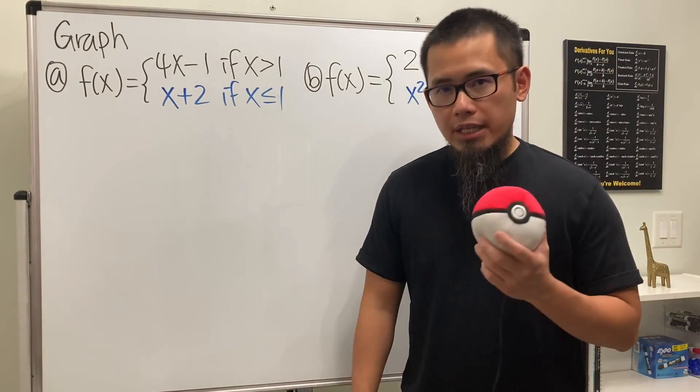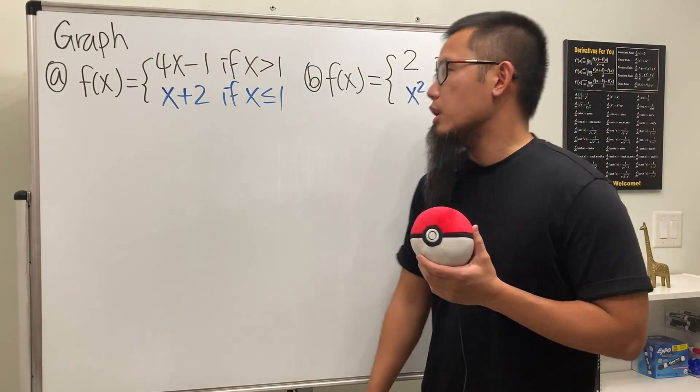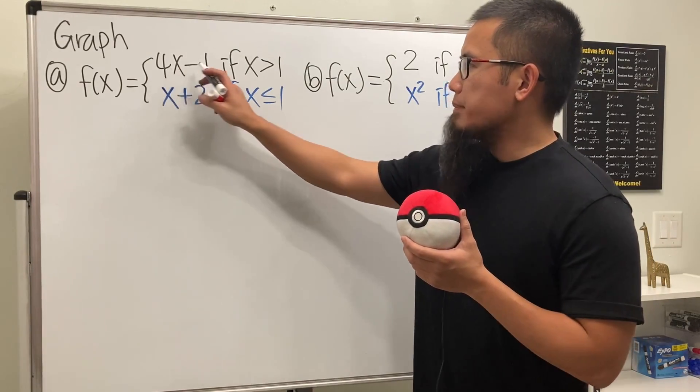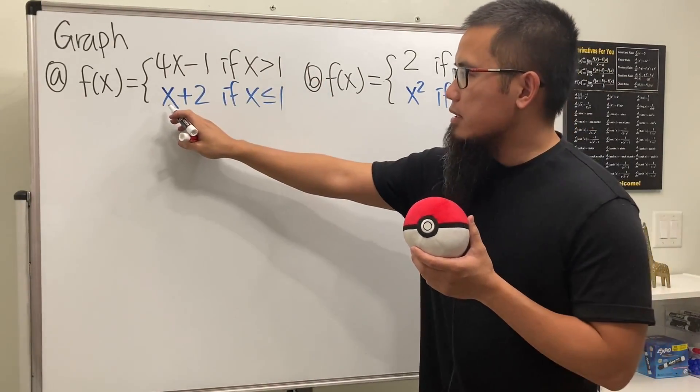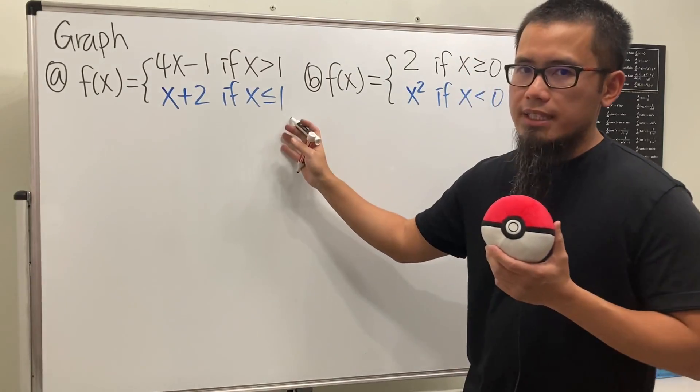How do we graph piecewise functions? In this video, I will give you guys two examples. Here, for the first one, we have 4x minus 1 if x is greater than 1, and the second piece is x plus 2 if x is less than or equal to 1.